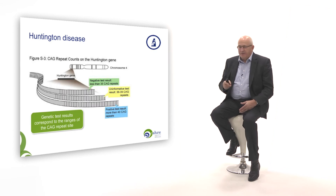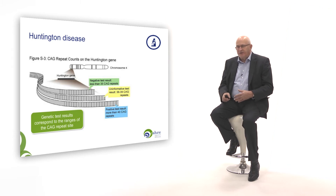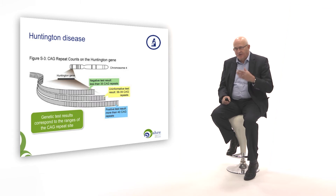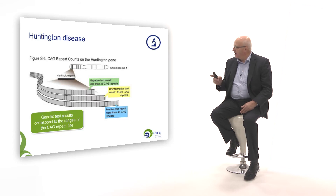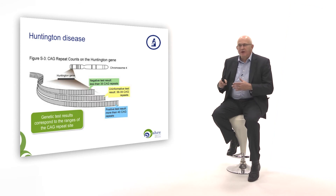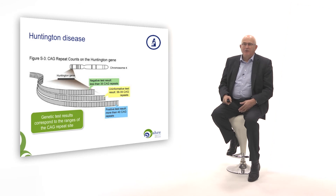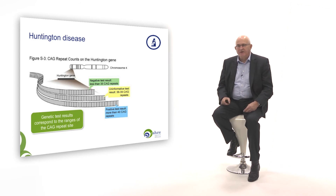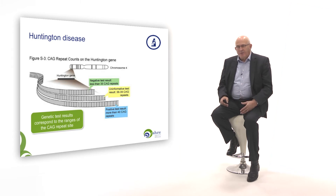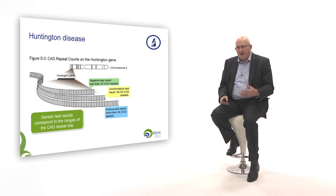The disease consists of an extra number of copies of a certain repeat. There are three bases in the DNA — three letters: CAG — and these repeats occur too many times. Once you have more than 40 copies, you get the disease. If you have fewer than 35, you are normal, and in between it is not yet clear. This means that in these families, people can be diagnosed by looking at the DNA and counting how many copies there are.